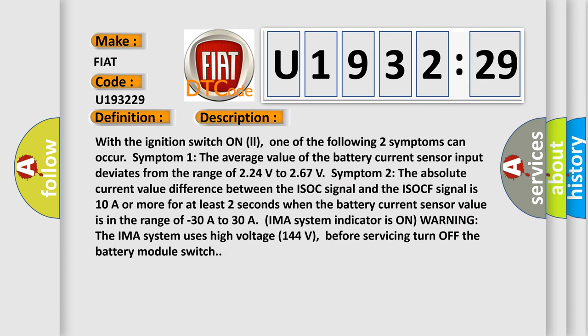With the ignition switch on, one of the following two symptoms can occur. Symptom 1: The average value of the battery current sensor input deviates from the range of 2.24 volts to 2.67 volts.